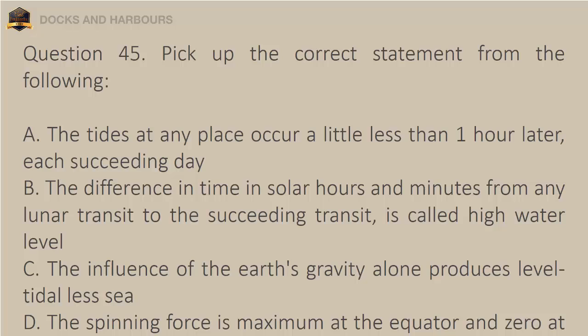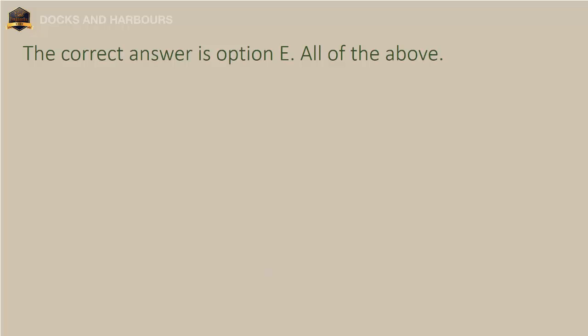Question 45. Pick up the correct statement from the following: a. The tides at any place occur a little less than one hour later each succeeding day. b. The difference in time in solar hours and minutes from any lunar transit to the succeeding transit is called high water level. c. The influence of the earth's gravity alone produces tidal effects. d. The spinning force is maximum at the equator and zero at the poles. e. All of the above. The correct answer is option E: All the above.